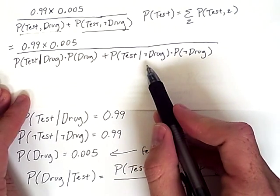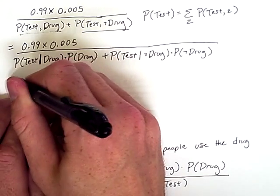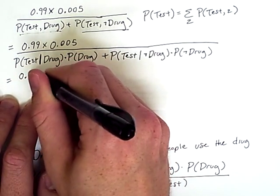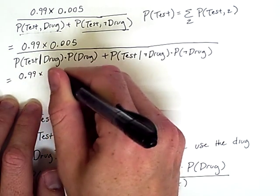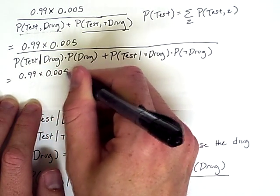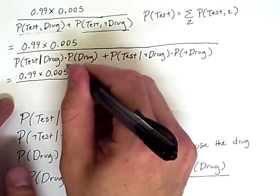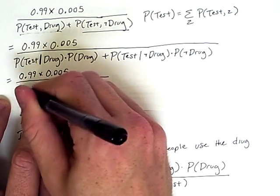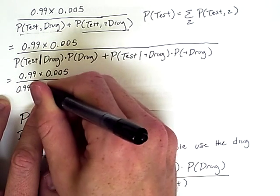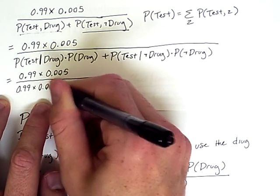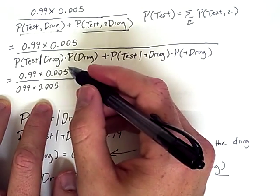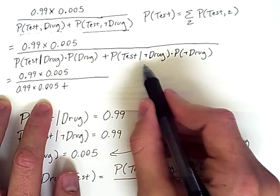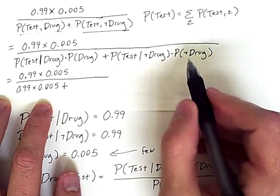These ones we don't quite have, but we can get them. So let's go step by step. We still have 0.99 times 0.005 over... This term is 0.99 times 0.005, so looking very familiar. And then this is added to these terms here.